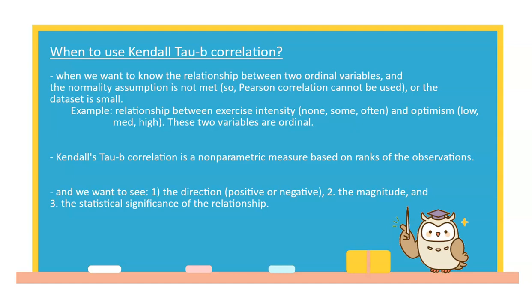Kendall's Tau-B correlation is a nonparametric measure based on the ranks of the observations. Similar to other correlation coefficients, we want to know the direction, either positive or negative, the magnitude or strength, and the statistical significance of the relationship between the ordinal variables.